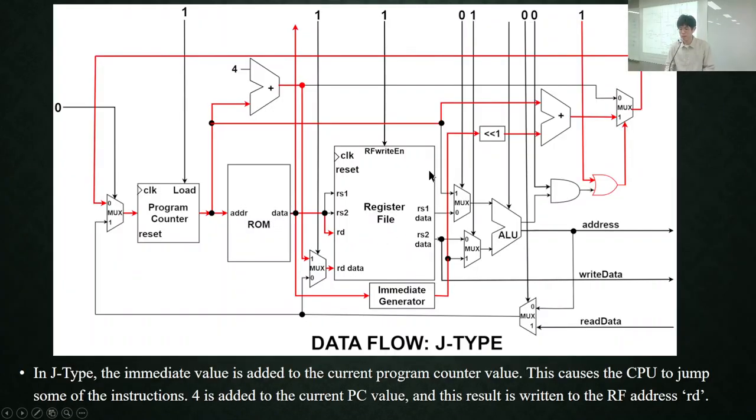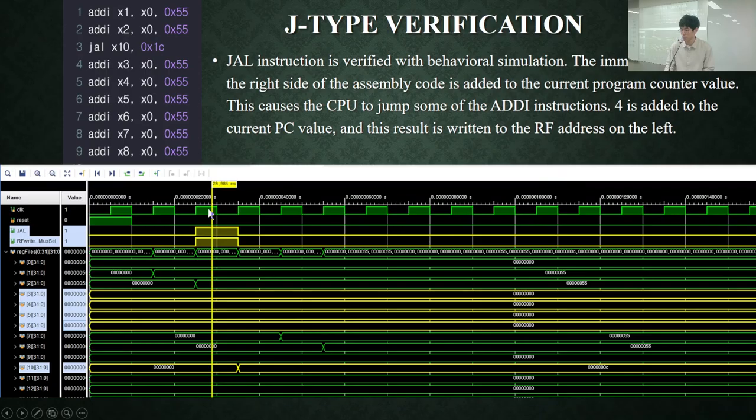For J-type, the immediate value is added to the program counter value, and this value goes back to the program counter. This is the simulation result of the JAL instruction. Please note that this JAL instruction made the CPU jump some of the instructions. So some of these addi instructions were not executed by the CPU, as shown in the simulation.